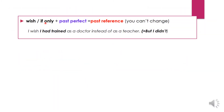Wish and if only can also be followed by past perfect. Here we have a past reference — you can't change this, there is nothing you can do about it. 'I wish I had trained as a doctor instead of a teacher.' But I didn't, unfortunately, and there is nothing I can do about it right now. So we use past perfect to refer to something that we can't change.